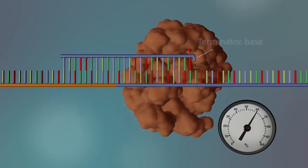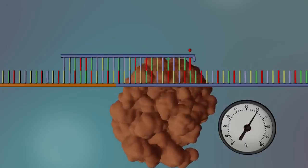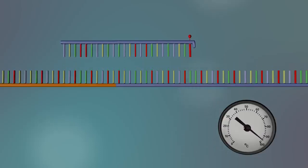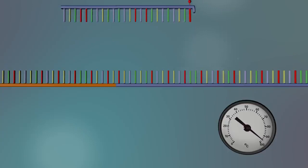These terminator bases have been chemically altered so that no more bases can be added to the new strand of DNA. Once a terminator base is added, the DNA polymerase enzyme stops making DNA and falls away from the strand. Everything is then heated to 96 degrees Celsius again to separate the new DNA strand from the original strand.